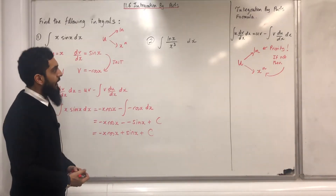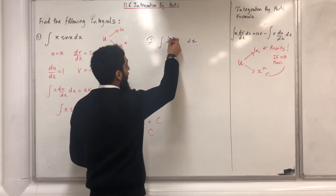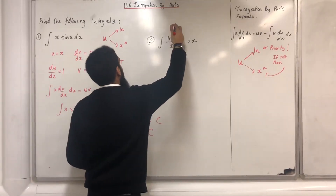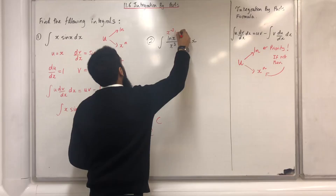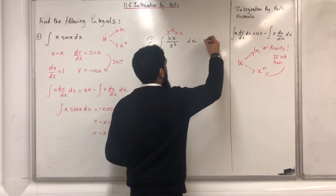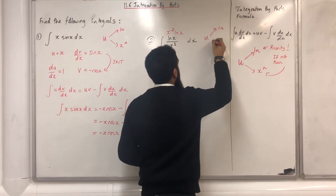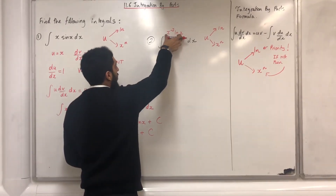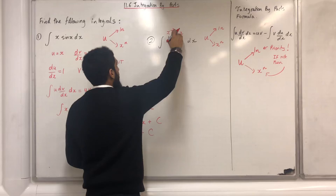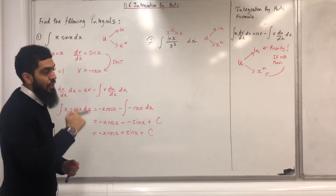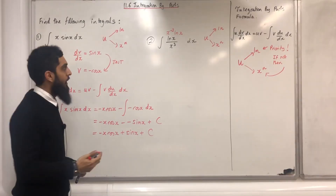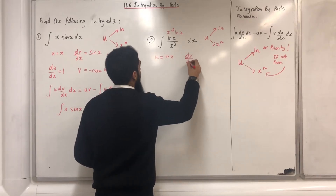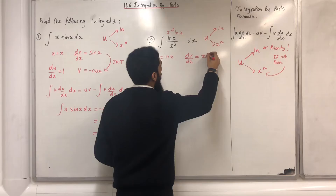Let's have a look at the second integral: the integral of ln x over x cubed dx. First of all, I can rewrite this fraction as x to the power minus 3 times ln x. Now, u is going to be ln if present. Over here we have a product of x to the power minus 3 and ln x. The ln x is included, therefore u has to be ln x — it has more priority. So u equals ln x, and dv/dx therefore equals x to the power minus 3.